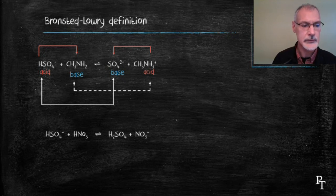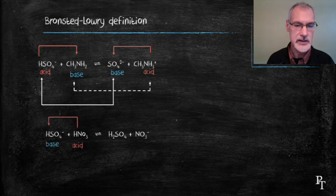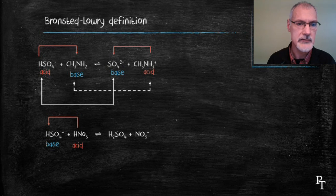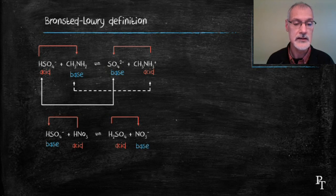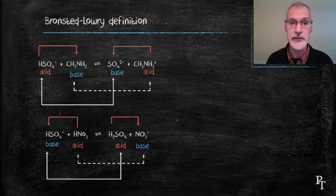Similarly, in the next example, I can see that the hydrogen nitrate in this example is donating a proton and is therefore identified as the acid. And the hydrogen sulfate ion that accepts the proton, its base. In the reverse reaction, I can see sulfuric acid is donating the proton and the nitrate ion accepting it. And again, identify my acid-base pairs.